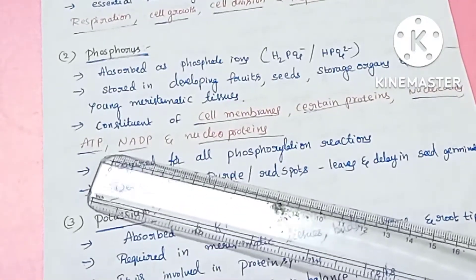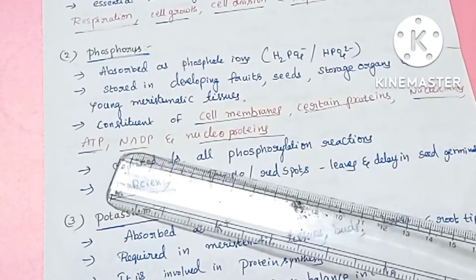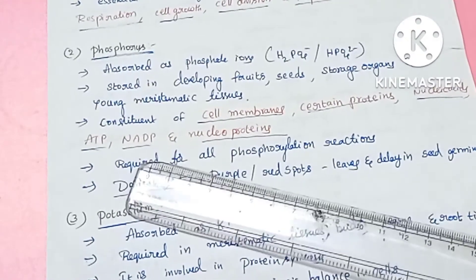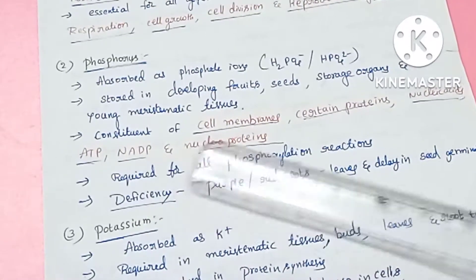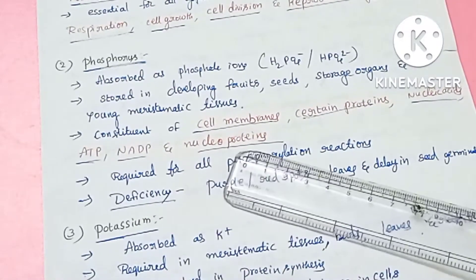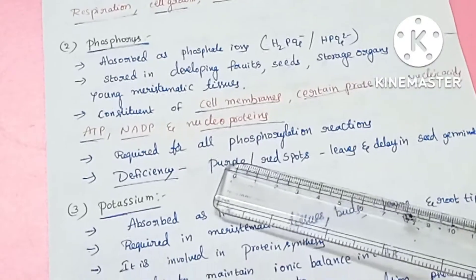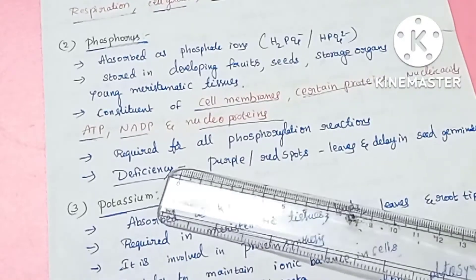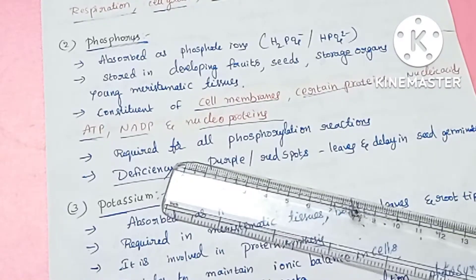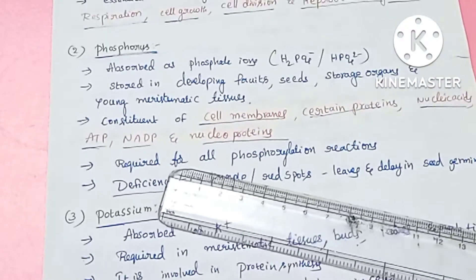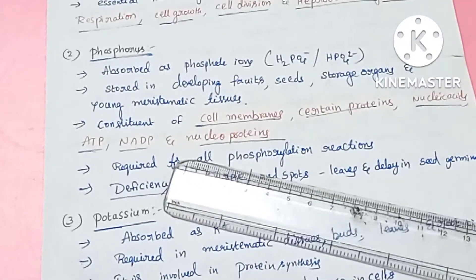Phosphorus is found in ATP (adenosine triphosphate) and NADP (nicotinamide adenine dinucleotide phosphate), as well as in nucleoproteins. Phosphates are also found in phosphorylation reactions — the addition of phosphate is called phosphorylation.